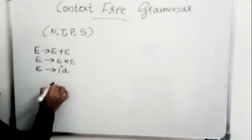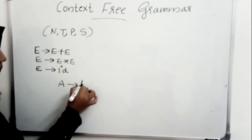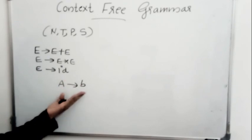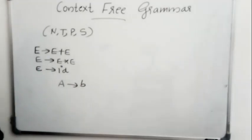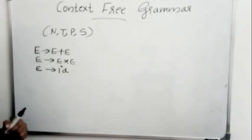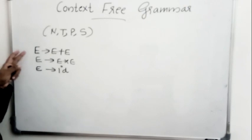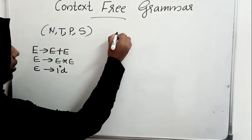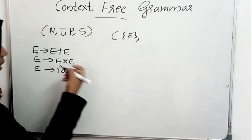A production rule is of the format A gives B. So the left-hand side symbol of the production is known as a non-terminal. Here we can see that only one symbol is appearing on the left-hand side of the productions and that is E. So E is the only non-terminal here.